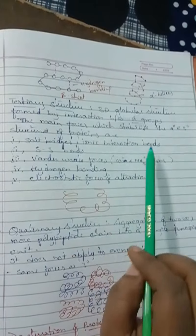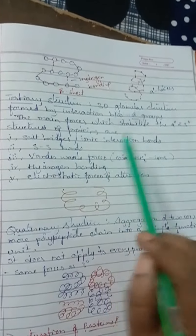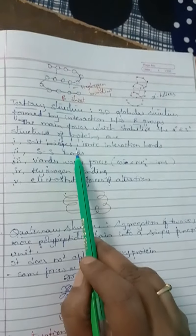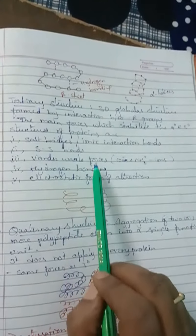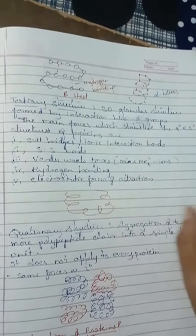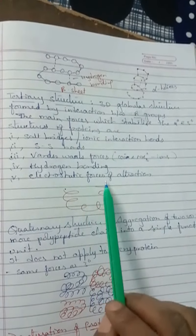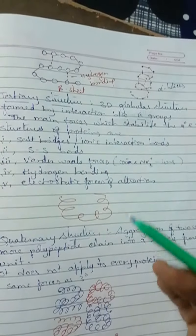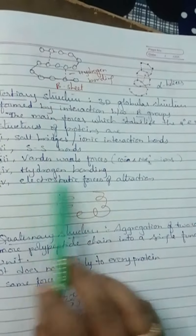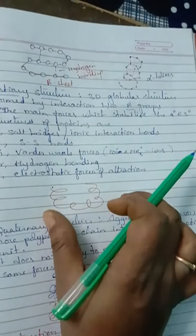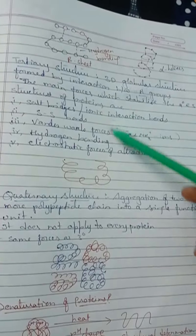Salt bridges arise because dipolar ions — COO⁻ and NH₃⁺ ions — are already present, and their interaction forms strong bonds. The extent of folding in tertiary structure depends mainly on ionic bonds, hydrogen bonds, disulfide linkage, and electrostatic forces of attraction. The resulting 3D folded shape is the tertiary structure.